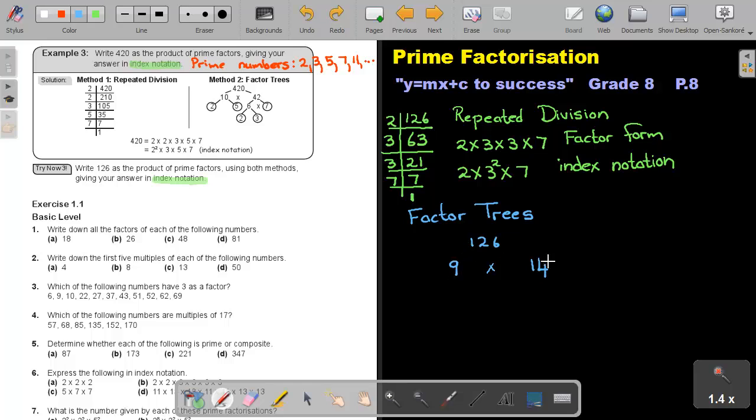Now, if you look at these numbers, you will see both of them are not prime numbers. So, I can again go and split them. So, take 9. That can be split into 3 times 3. And then, both of them will be prime numbers. And then, 14, that will be 2 times 7.